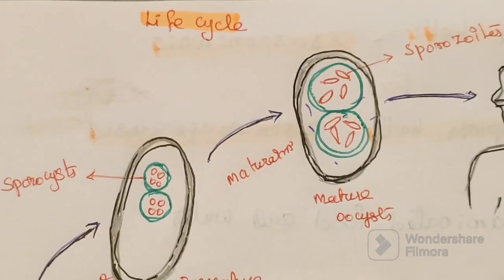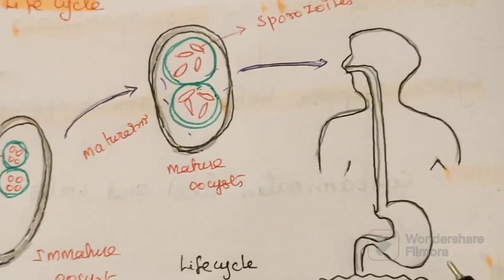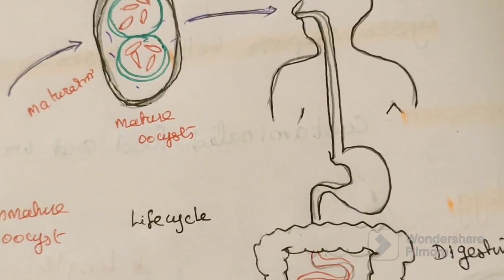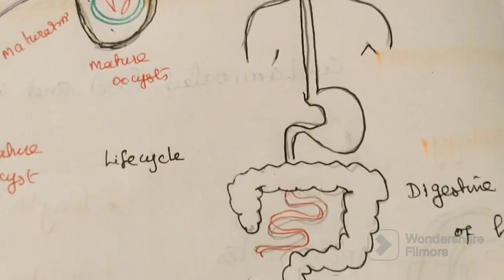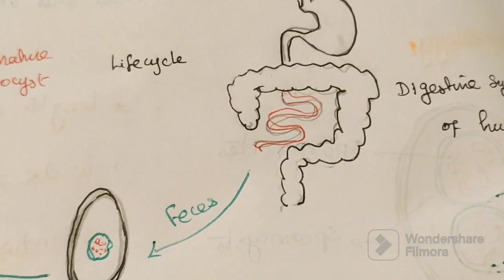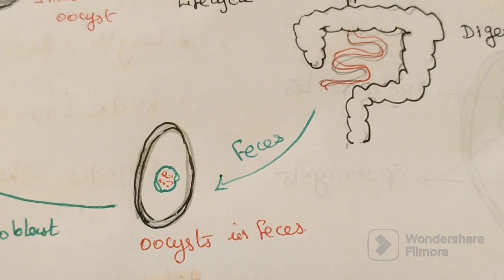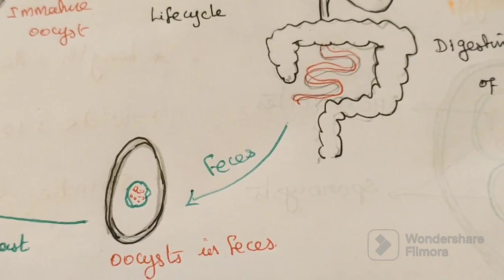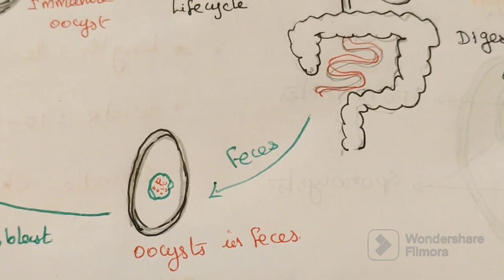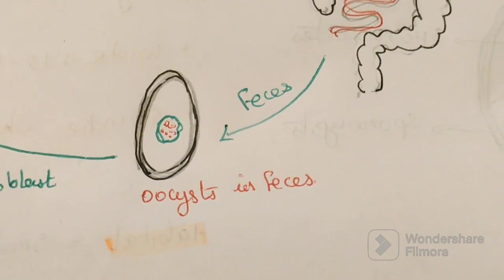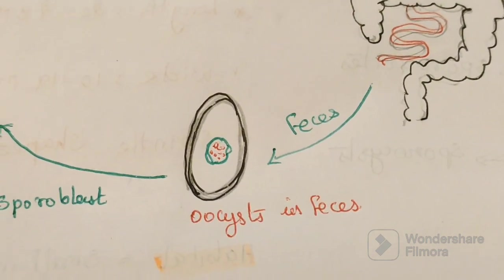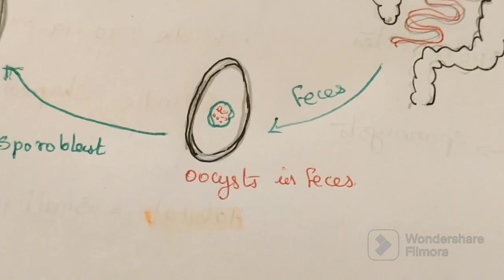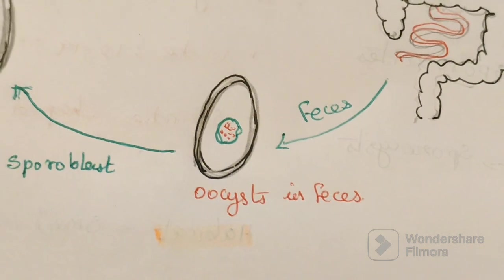Now, coming to the life cycle. This person is infected with isosporiasis. This person excretes fecal material containing oocysts of Isospora belli. This oocyst is immature in form because the sporocysts are not completely mature, so these oocysts undergo a maturation process.